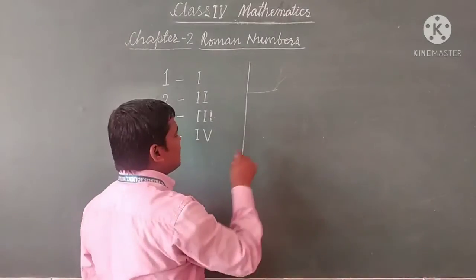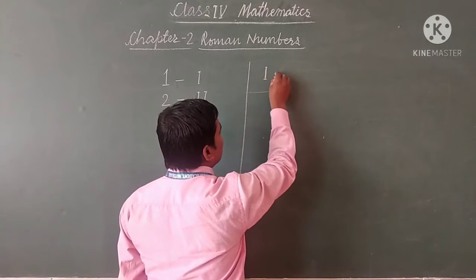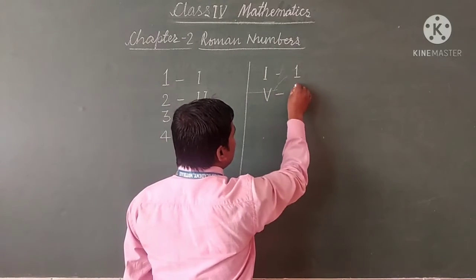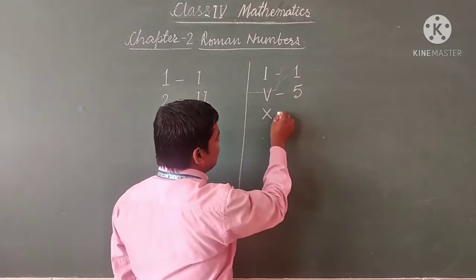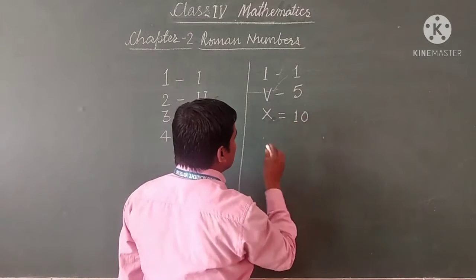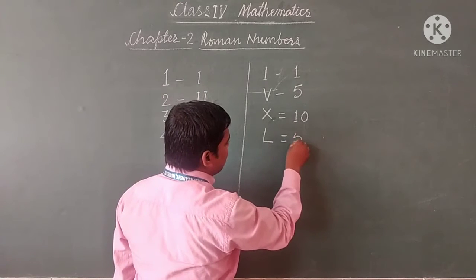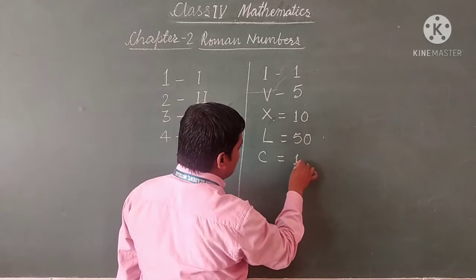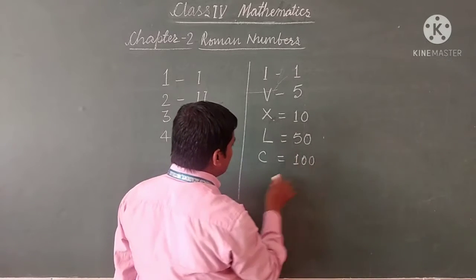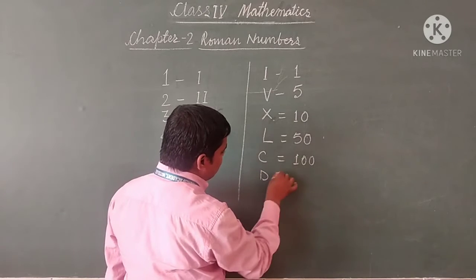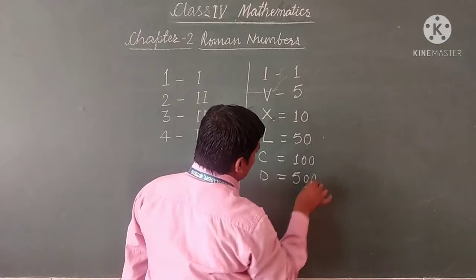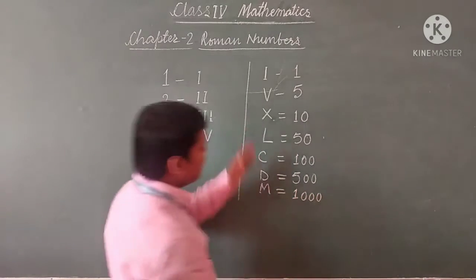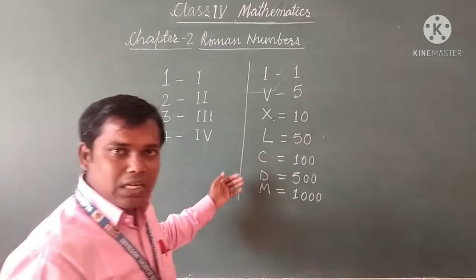Let me discuss these symbols again. This symbol I is used for 1, this symbol V is used for 5, this symbol X is used for 10, symbol L is used for 50, symbol C is used for 100, and symbol D is used for 500. So these are the symbols which we use to write Roman numbers.